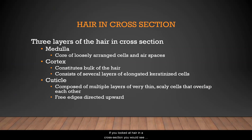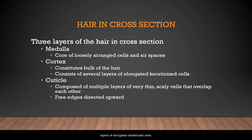In cross section, hair has three layers. The medulla is the core of loosely arranged cells and air spaces. The cortex constitutes the bulk of the hair, consisting of several layers of elongated keratinized cells. The cuticle is composed of multiple layers of very thin, scaly cells that overlap each other, with the free edges directed upward.